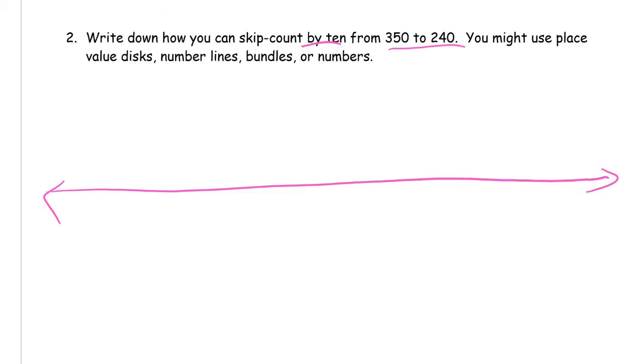You could do this with bundles and cross out. You could do with place value disks and cross out tens. But if we're going to start at three hundred fifty, then we're going to go backwards by tens to two hundred forty. So this is minus ten, three hundred forty. So you might see right now I'm going to have to do this about ten more times.